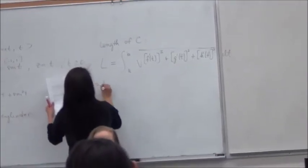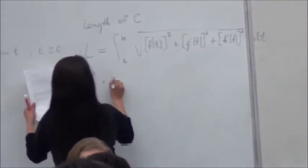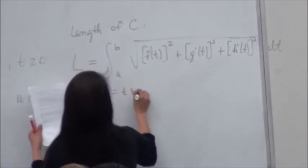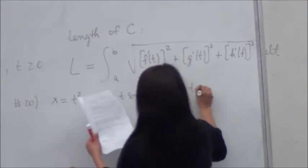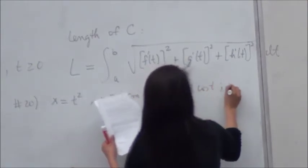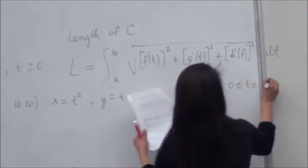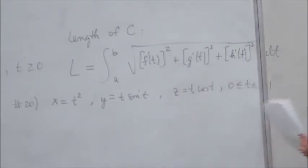We have X equals T squared, Y equals T sine T, and Z equals T cosine T. And let's just say that we just want T to range from 0 to 1. To vary from 0 to 1.